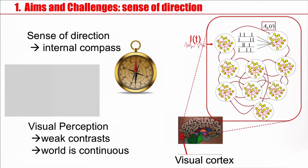So, visual cortex consists of different neurons, different populations of neurons. They interact with each other. And if you want to understand this sense of direction, if you want to understand visual perception, it's good to have a nice model of these interacting populations.